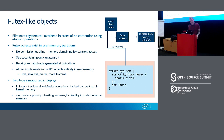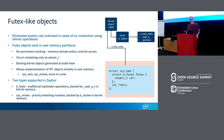We also have priority-inheriting sys mutexes, implemented similarly. On the kernel side, if you actually have to wait on one of these mutexes, it uses our kmutex data type to implement priority inheritance. This is very similar to how Linux does it — when you call into the kernel for futex PI calls, it instantiates an RT mutex behind the scenes to perform such locking.